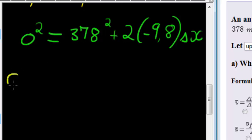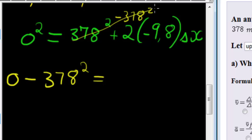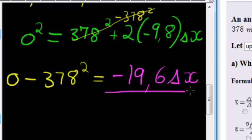So what we notice here on the right hand side, we have zero. Then we have 378 squared. Okay, so obviously 378 squared must go to the other side of the equation because we want to solve for x. So we are going to subtract 378 squared on both sides. That will cancel it on the right hand side, and I'll be left on the right hand side with negative 2 times 9.8, which gives me negative 19.6 times change in x. And now to solve, divide both sides with negative 19.6.